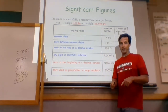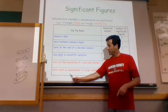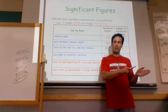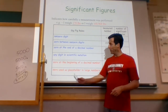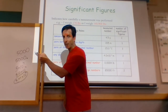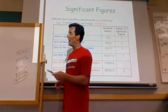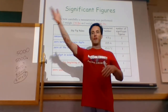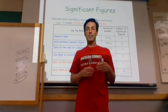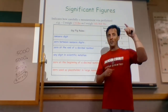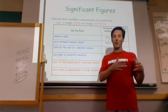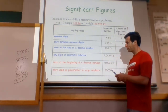Zeros to the right are significant if there's a decimal, and not significant if there's no decimal. If they're just being used as placeholders in a large number like 5,000 with no decimal, you assume they're rounded off. Basically, 5,000 means some value was rounded to the nearest thousand — it could have been 4,672 rounded up to 5,000. So the hundreds, tens, and ones positions were all rounded off and none of them are accurate. That's what it means to have only 1 sig fig.